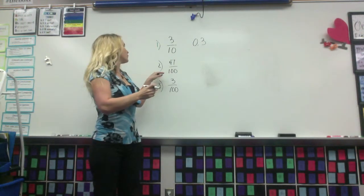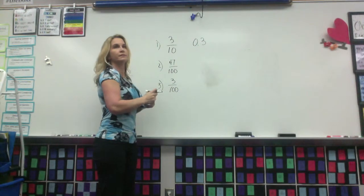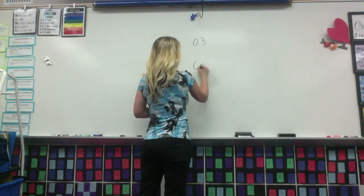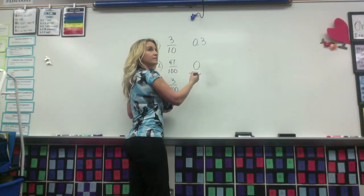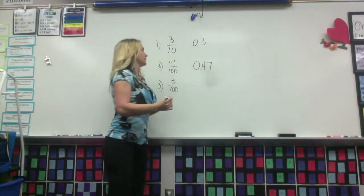Number two. Ronnie answers "Zero point forty-seven," which the teacher corrects: "if we said that correctly, we would say zero and forty-seven hundredths. There we go."